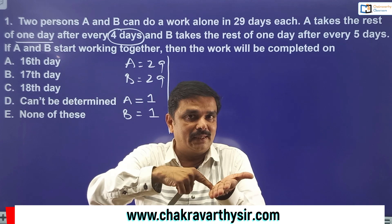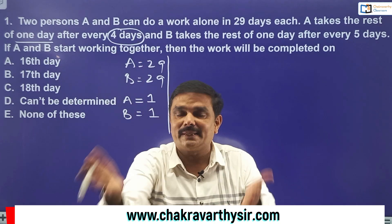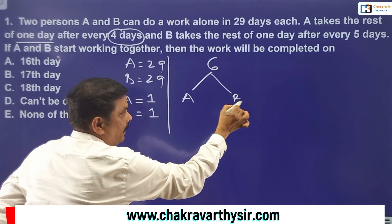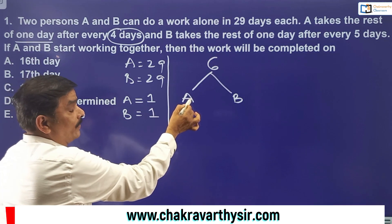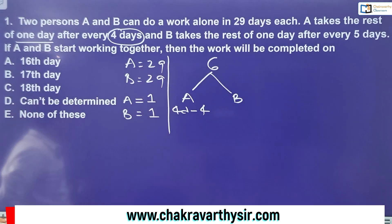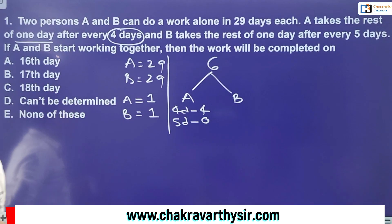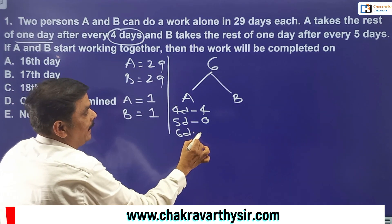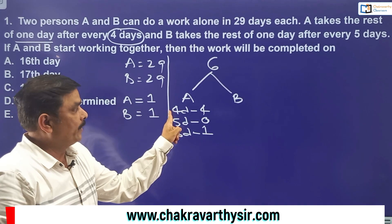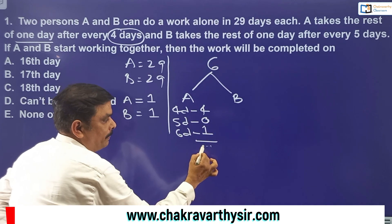So take six days as one set — five days of work and one day of rest. In six days, how much work is done by A and by B? For A: in the first four days, A works at one unit per day, doing four units. On the fifth day he takes rest — zero units. On the sixth day he works again — one unit. So in six days, A can complete four plus one, which is five units of work. For B: in the first five days, he does five units of work, and on the sixth day he takes rest — zero units. So net, in six days B also completes five units of work.